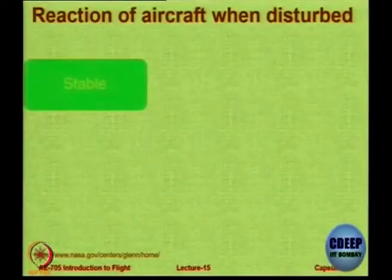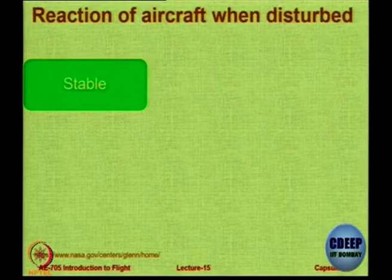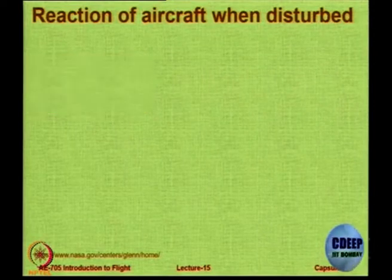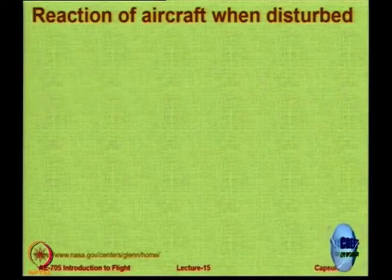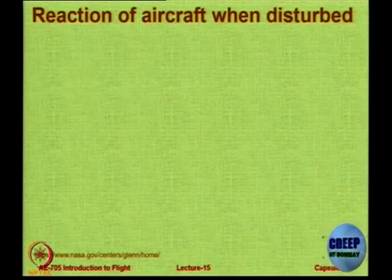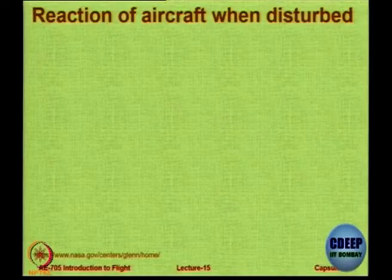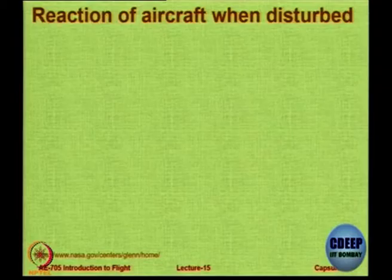Let us see what is the reaction of an aircraft when it is disturbed. The aircraft is in trimmed condition — forces are in balance, moments are in balance — and now some disturbance acts on that particular aircraft. Its reaction determines its stability.